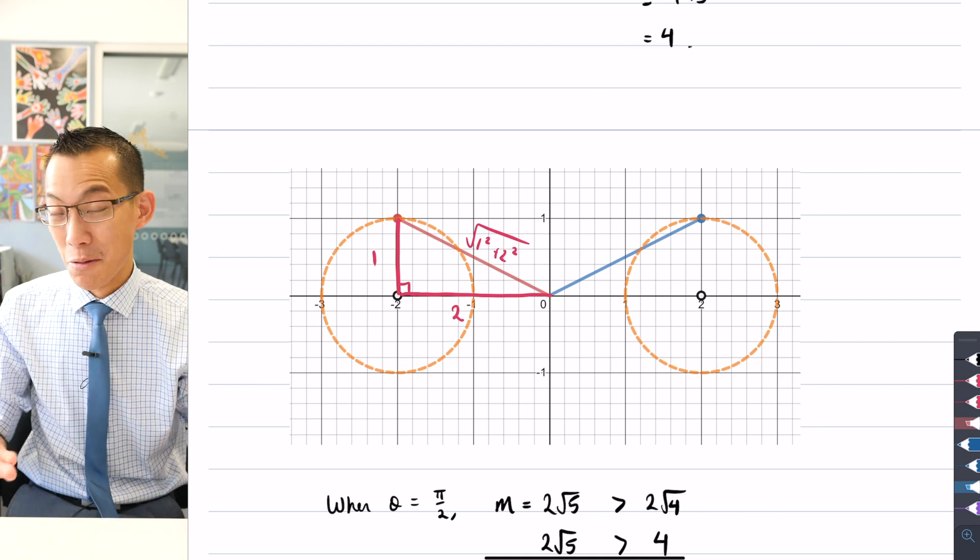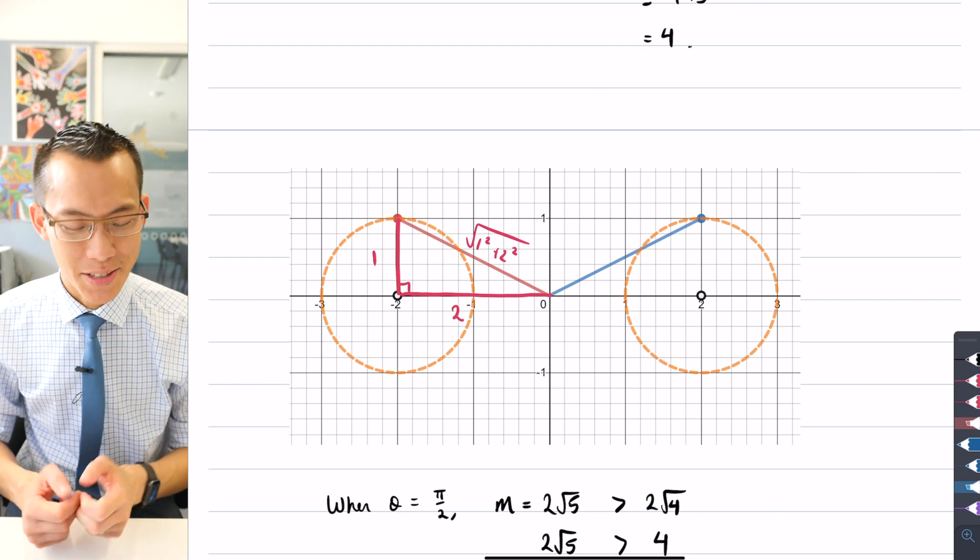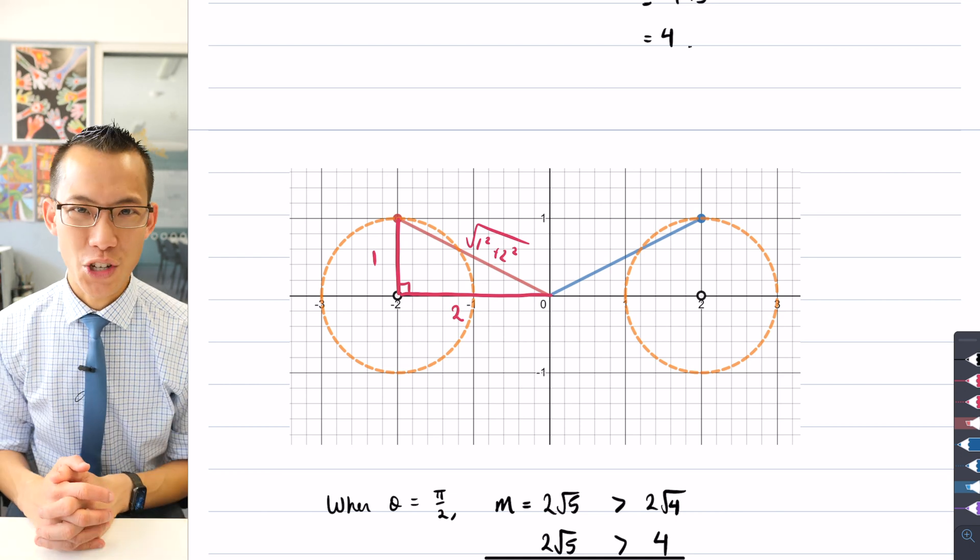So moral of the story, complex numbers, they're two-dimensional objects. Do yourself a favor and draw the shapes that they represent.